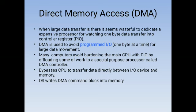Many computers avoid burdening the CPU with PIO by offloading some of the work to a special-purpose processor called a DMA controller. When we use a separate processor, the main CPU's load is reduced. The DMA controller bypasses the CPU to transfer data directly between I/O devices and memory.